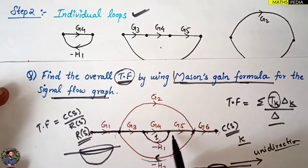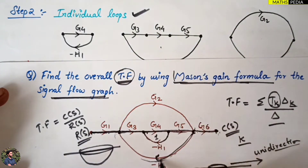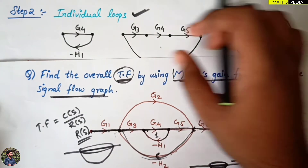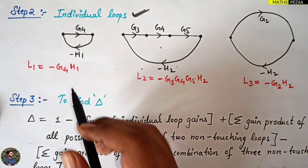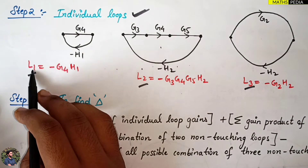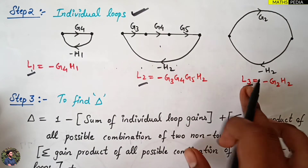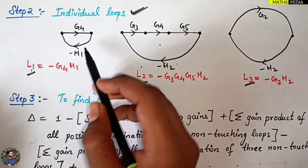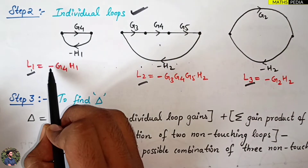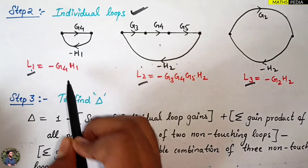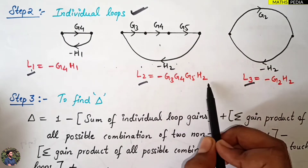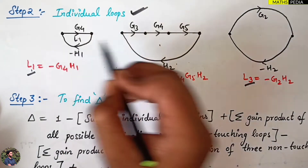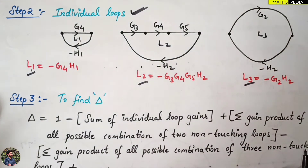Loop 1 has gain g4·h1 — note the negative sign makes it minus g4·h1. Loop 2 is the path through g3, g4, g5 and h2, giving minus g3·g4·g5·h2. Loop 3 is the bigger loop with gain minus g2·h2. So we have L1, L2, and L3 written with their respective gains. This completes step two.